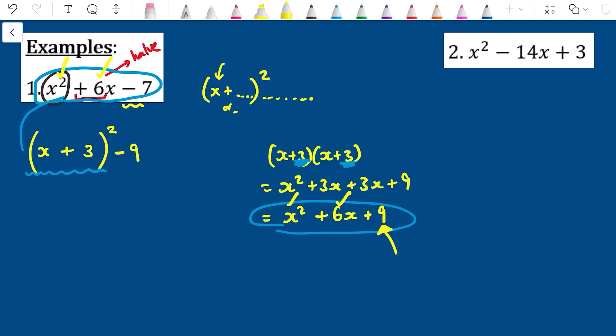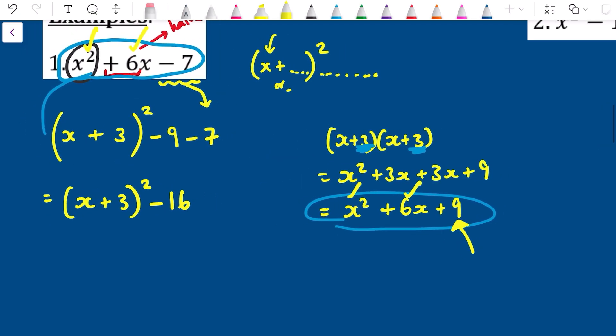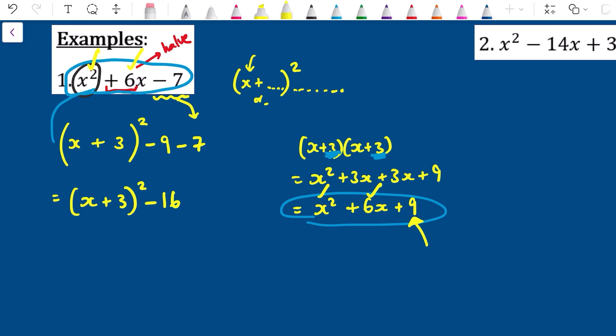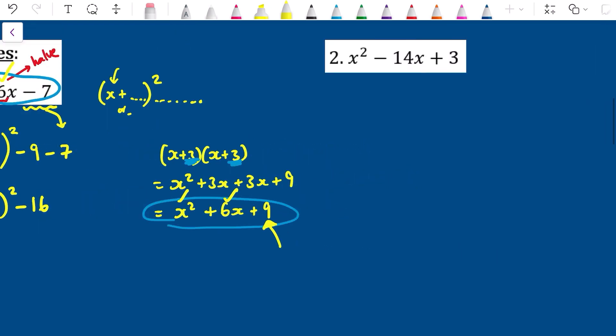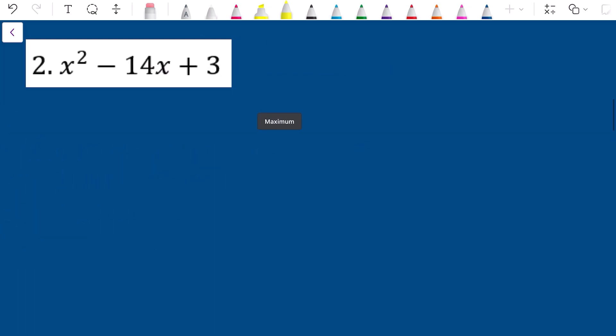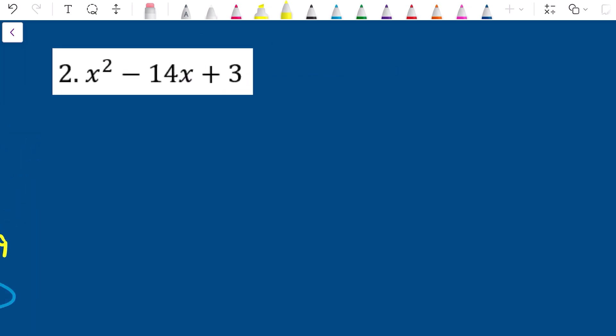So all I'm going to do to undo that is subtract 9 straight away. And then I'm almost finished. I just need to remember I still need my -7 so I'm going to carry that down there into my expression. Then I'm just going to tidy things up and I'll be left with (x + 3)² - 16. There we go. Now I have completed the square.